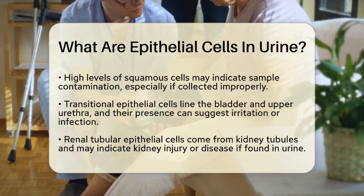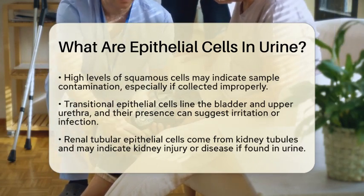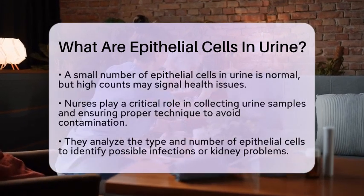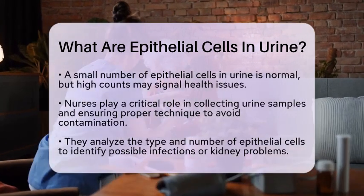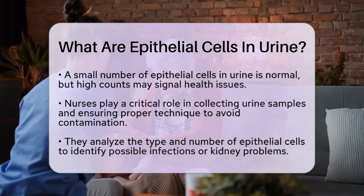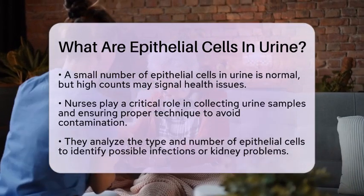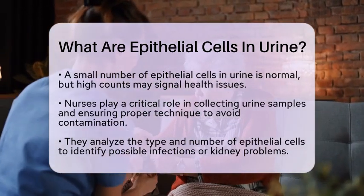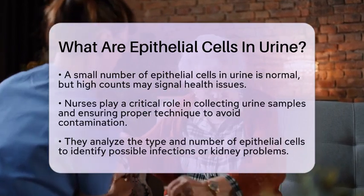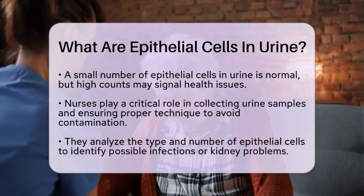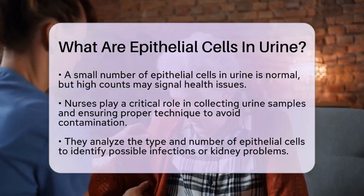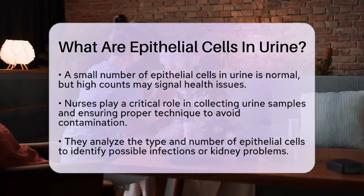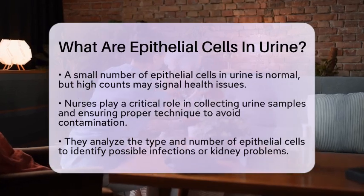A small number of epithelial cells in urine is normal. However, if there are a high number of these cells, or if certain types like renal tubular cells are present, it could signal underlying health issues. These issues might include urinary tract infections or kidney problems.